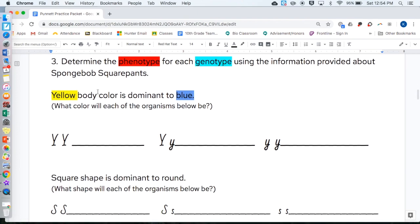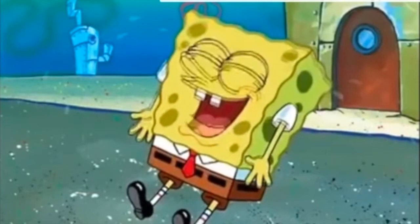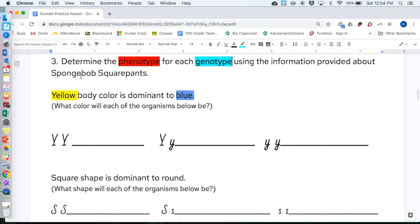Number three, determine the phenotype. Remember, pheno is the physical appearance. For each genotype, the genetics, the little letters, the allele pair, using the information provided about SpongeBob SquarePants. Yellow body color is dominant to blue body color. So, based on these, what color will each of the organisms be below? So, your answer should either be yellow or blue or something else.